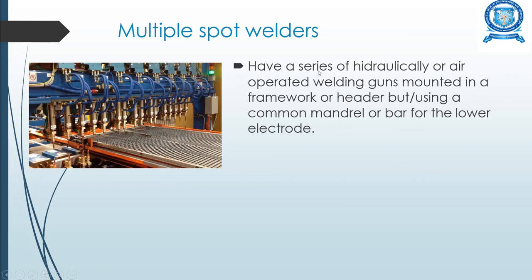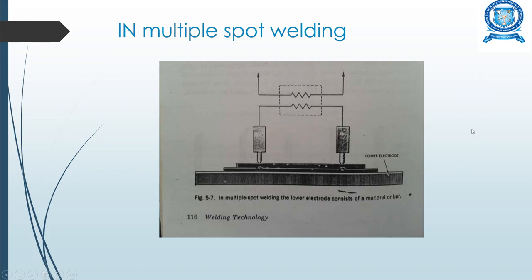Multiple spot welders use a series of hydraulic or air-operated welding guns mounted in a framework or header, with a common mandrel or bar serving as the lower electrodes. In multiple spot welding, the lower electrodes consist of a mandrel, with separate upper electrodes on top. Pressure is applied, the current is switched on, and this pressure is maintained until a solid spot weld is obtained at the junction of the two metals being joined.